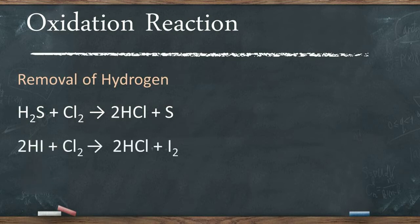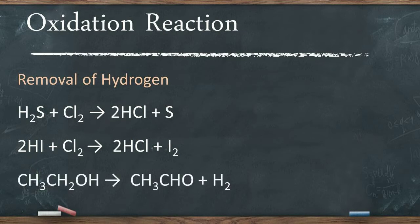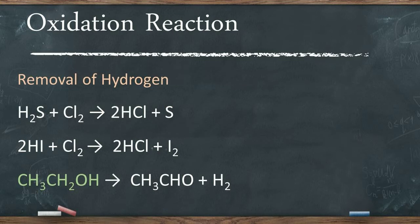Similarly, when hydrogen iodide reacts with chlorine to form hydrogen chloride and iodine, hydrogen is removed from hydrogen iodide to form iodine, so hydrogen iodide is said to be oxidized. Also, hydrogen is removed from ethanol to form ethanal, so this reaction also represents an oxidation reaction and ethanol is said to be oxidized.